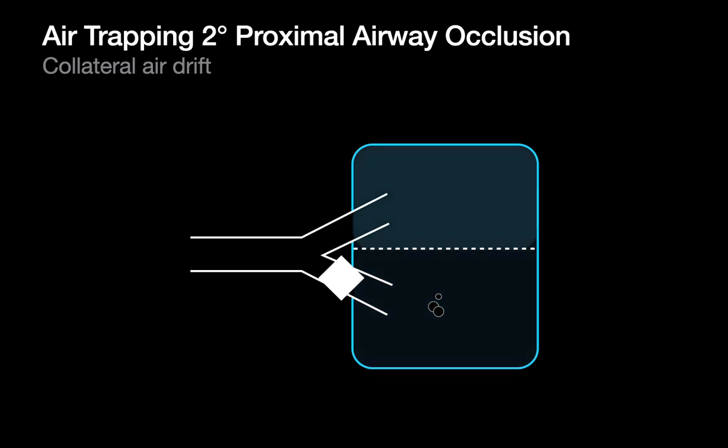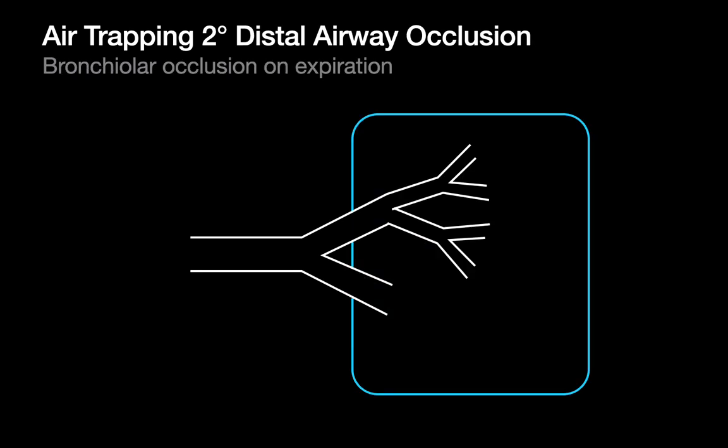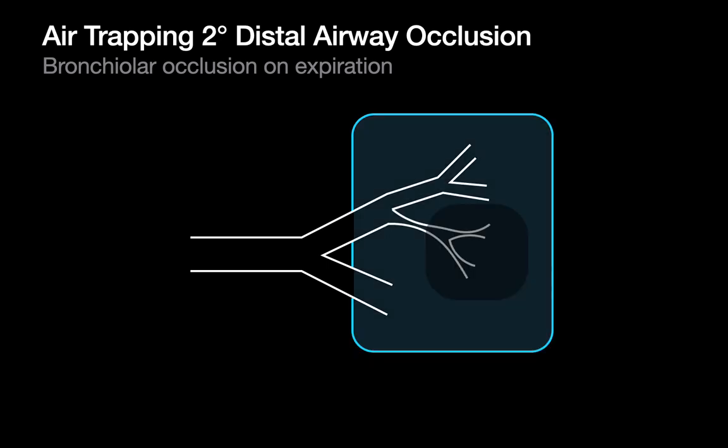We can also encounter air trapping when something occludes the airways much more distally. In this scenario, you might bring air into the lung, but when you try to breathe out, those distal airways collapse or occlude, preventing all the air from being pushed out — effectively resulting in an area of air trapping.